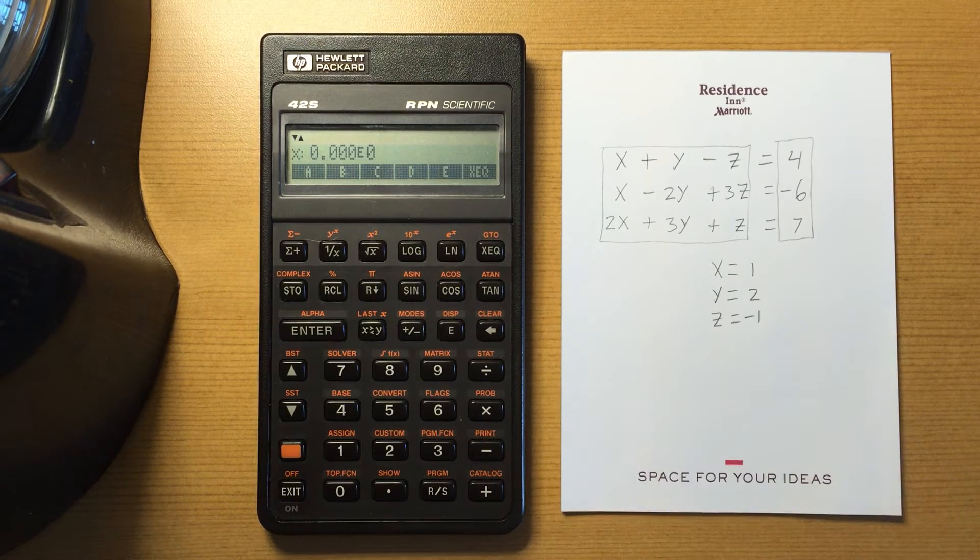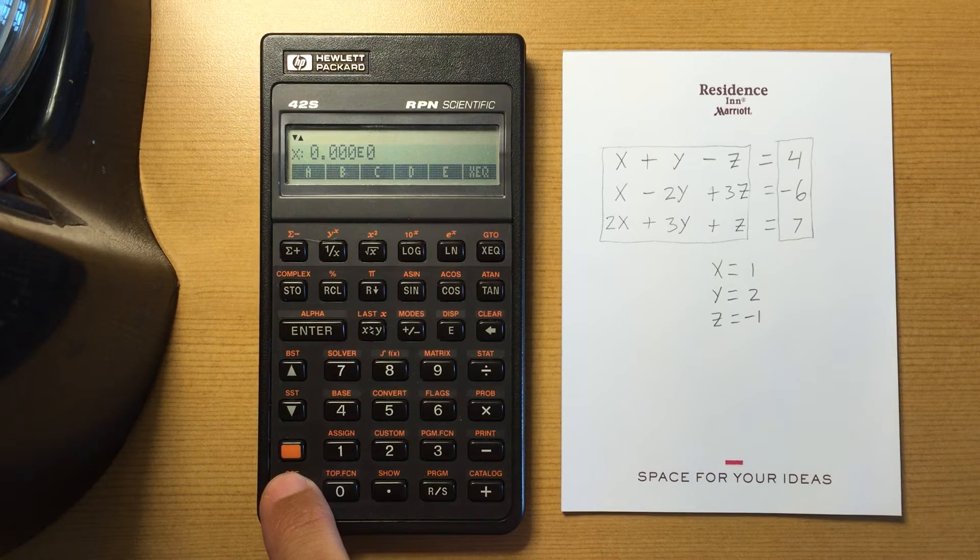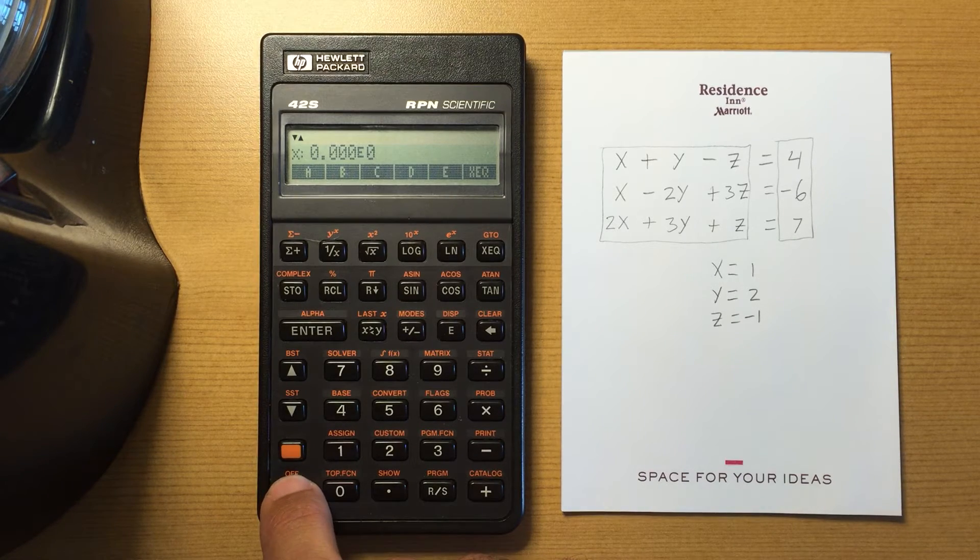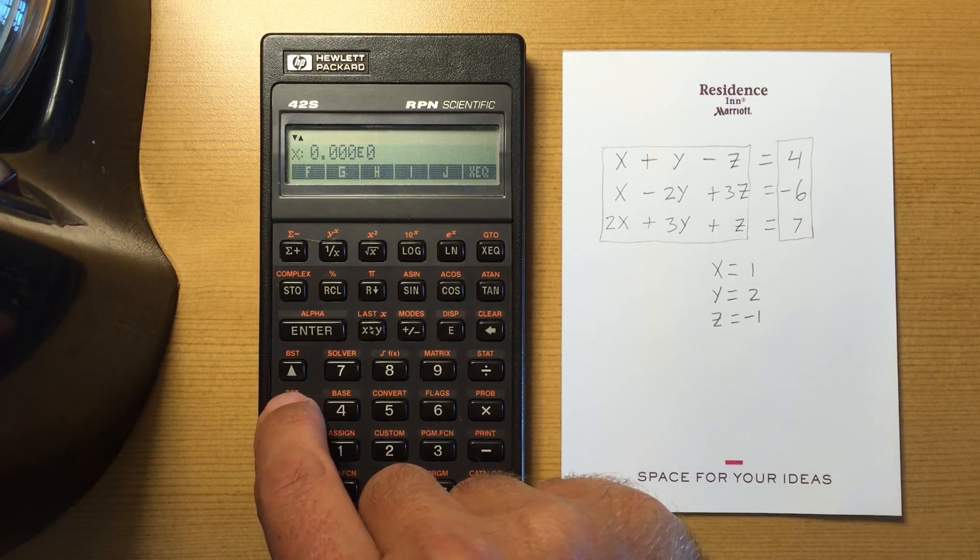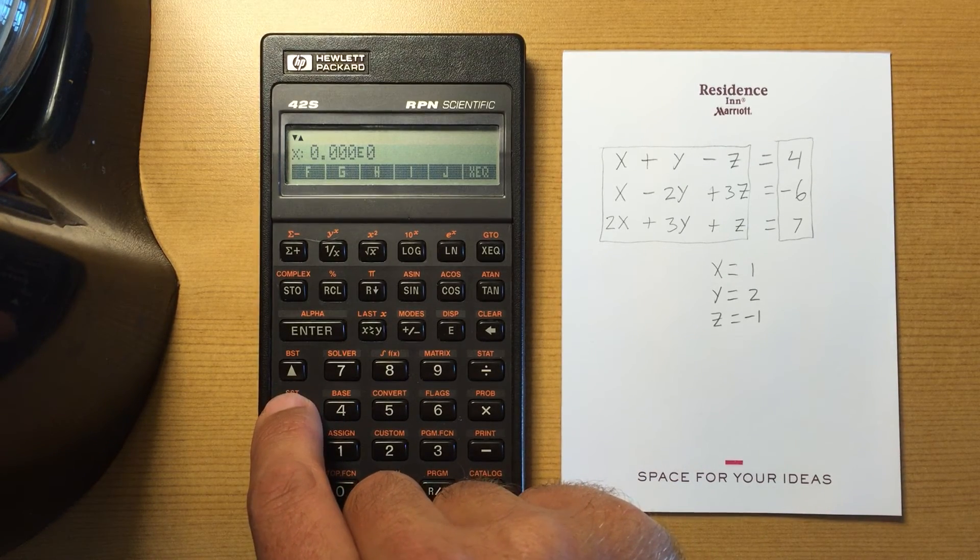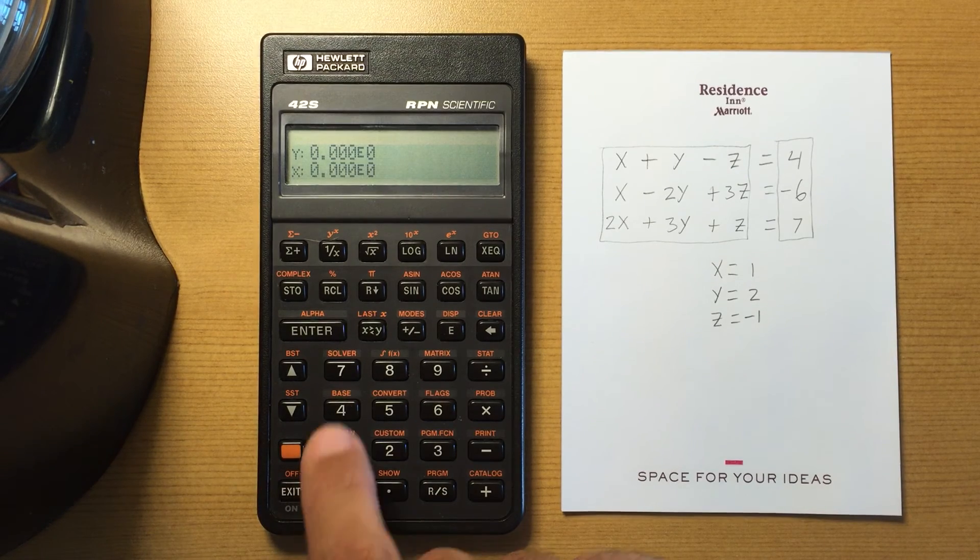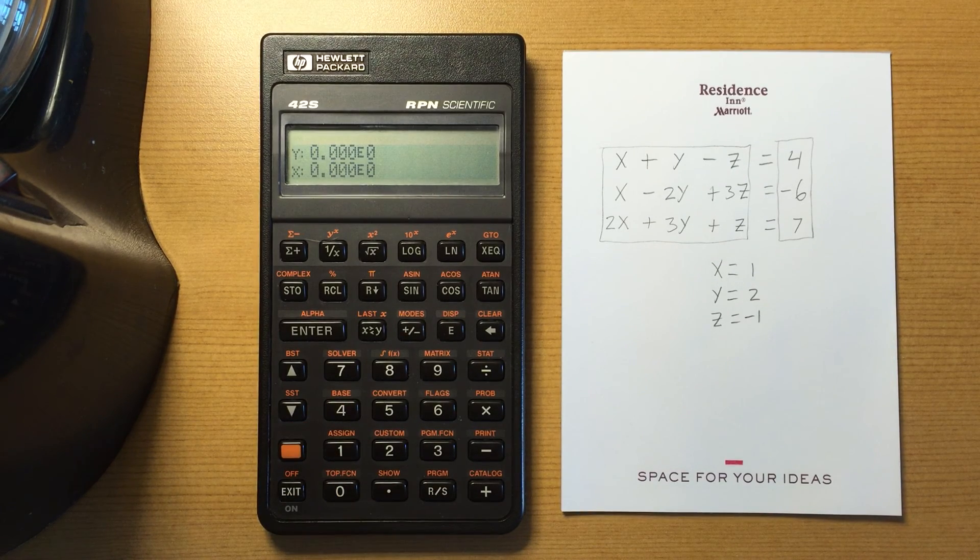We're using that in my programming. So that could be helpful when you're programming. Use those local labels for cutting down on memory space. So those are the modes and display menus.